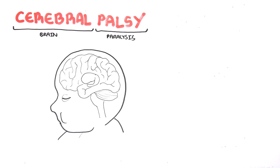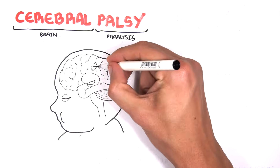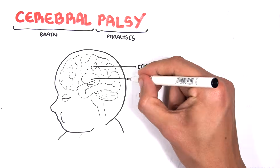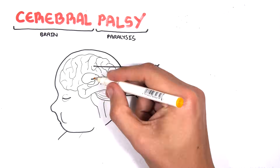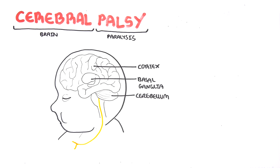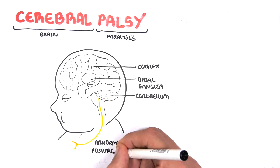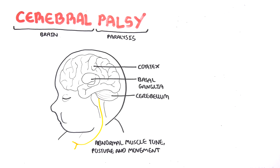There are three important parts of the brain to know when dealing with cerebral palsy: the cortex, which is essentially the brain itself; the basal ganglia within the brain; and then the cerebellum. Cerebral palsy is a problem in one or more of these areas, causing abnormal muscle tone, posture and movement.